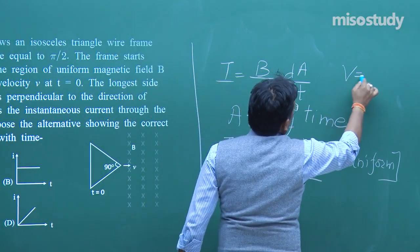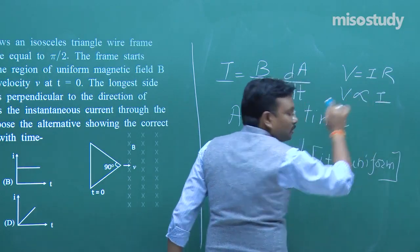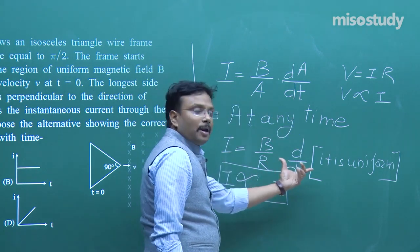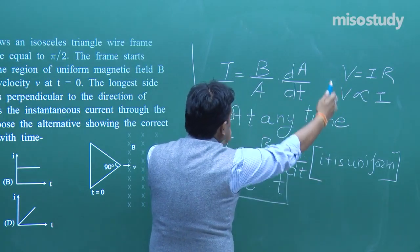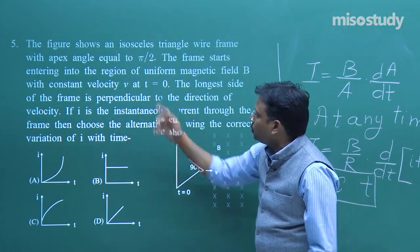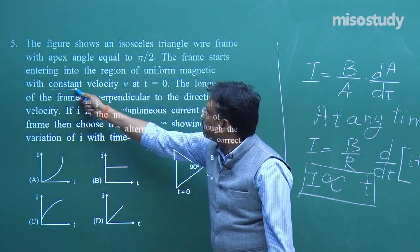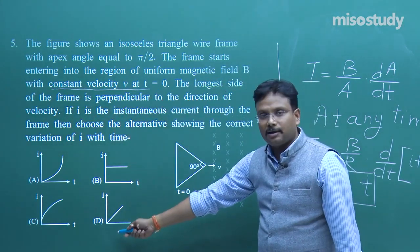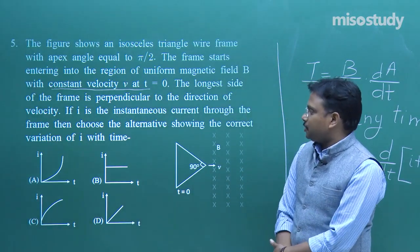Only the linear graph correctly represents this variation. Either way — whether you use the conceptual shortcut or the calculation — the answer is the same. In the examination hall you should aim for the faster approach: from 'constant velocity,' recognize the answer in about 10 seconds.